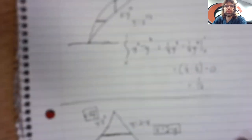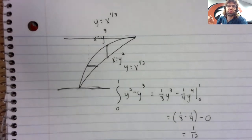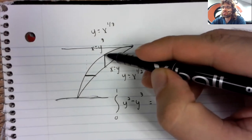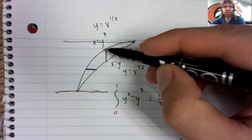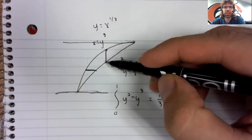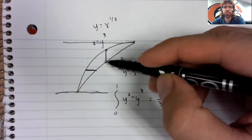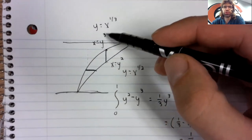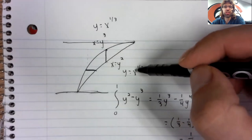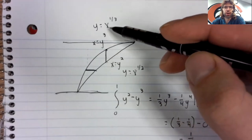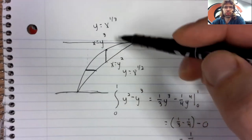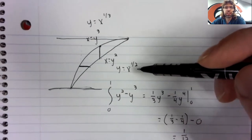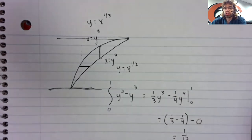We're most used to integrating with respect to x, with this as the upper function and this as the lower function. If we wanted that, we'd have to rewrite both these curves: y equals x to the one third, y equals x to the one half. I didn't see any advantage to that.